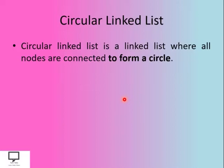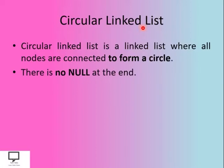How is it different from SLL? The only difference is that in a circular linked list, it forms a circle — that's why it is called circular linked list. There is no null at the end of the list, because the null is replaced with the address of the first node to form a circle. I am going to explain all these things in detail as we go forward in this video series.